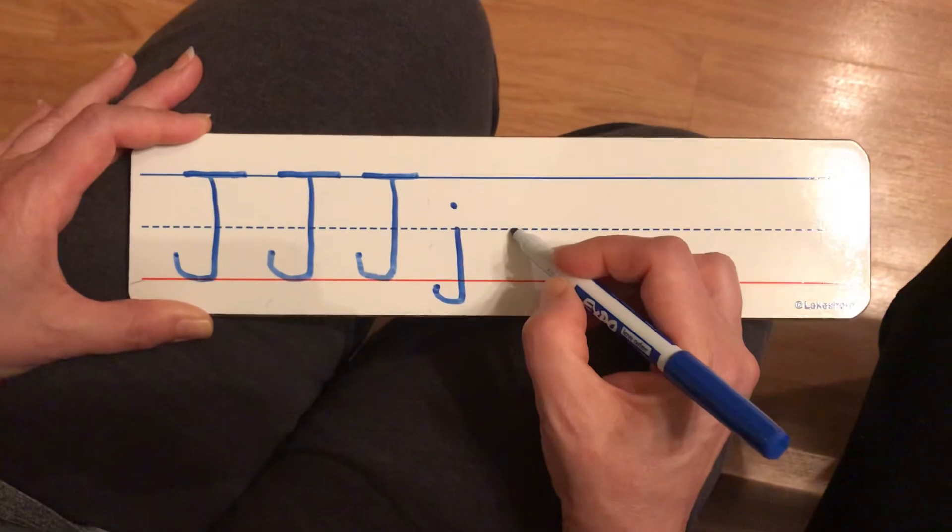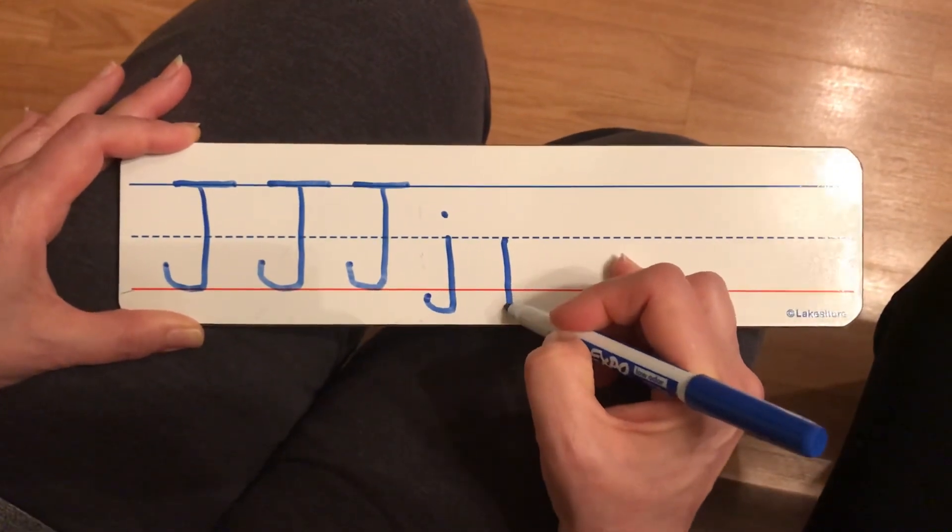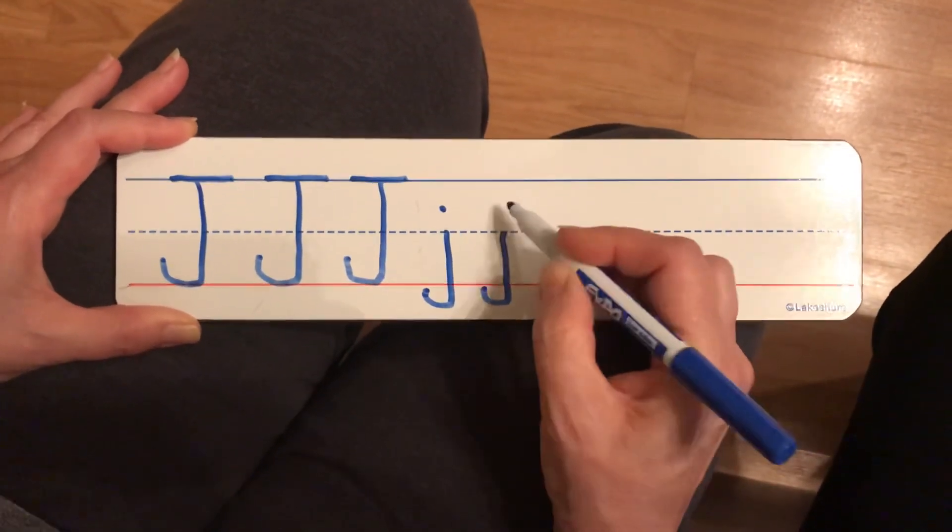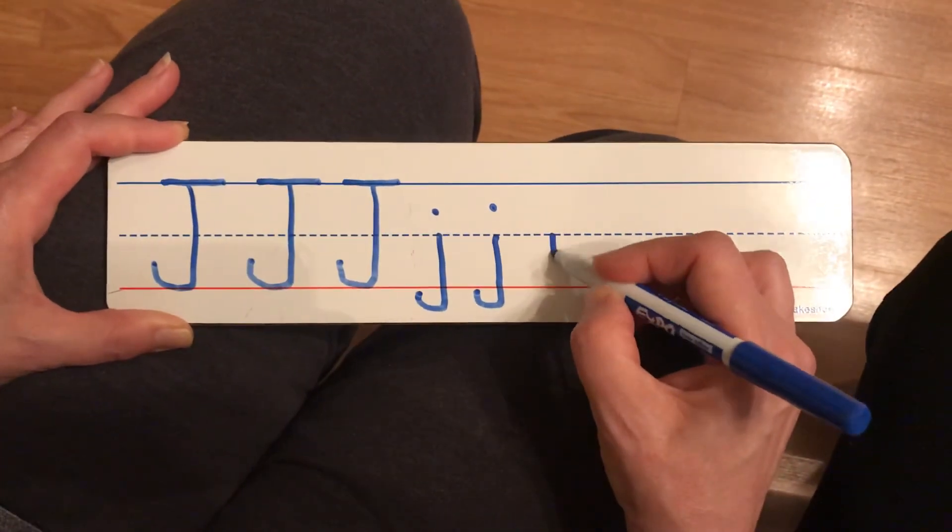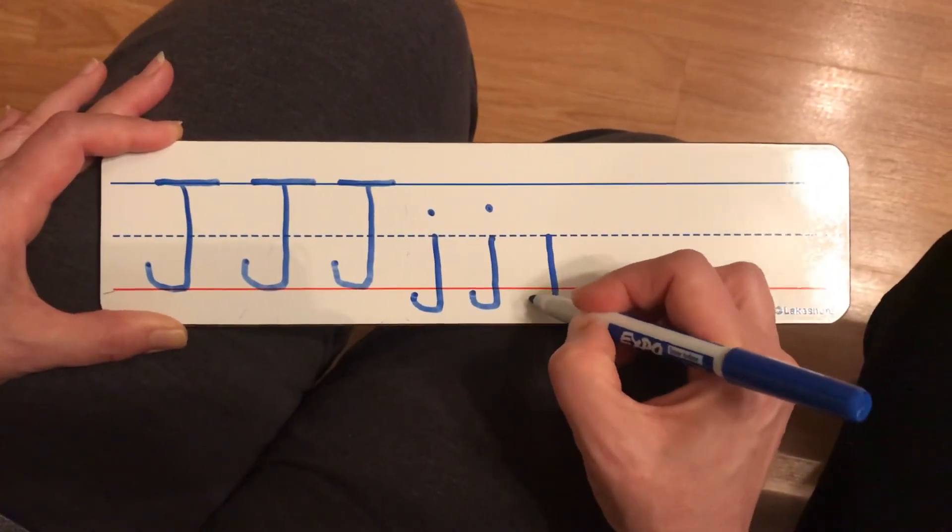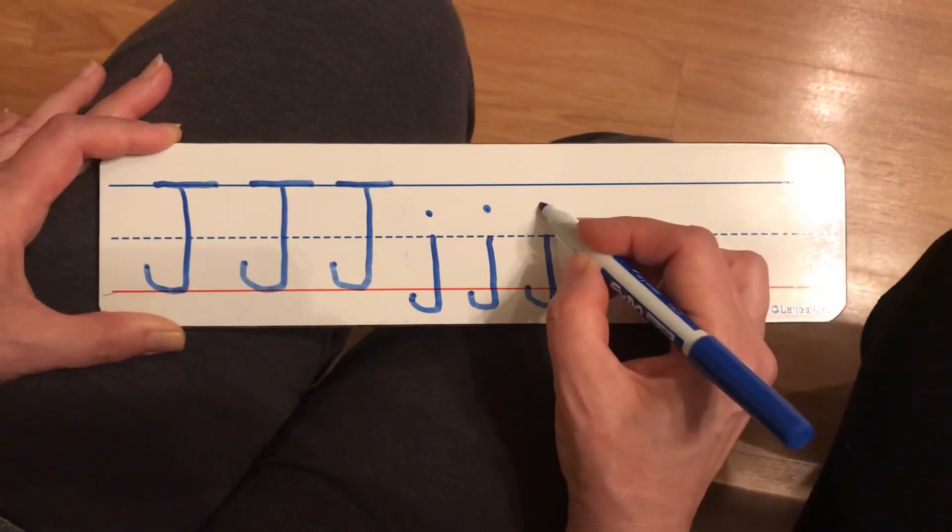Start right up here at the dotted line. Big line down, curve up, and a dot. One more time. Big line down and curve up and stop, and a dot.